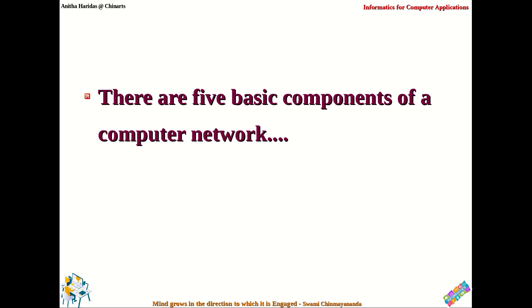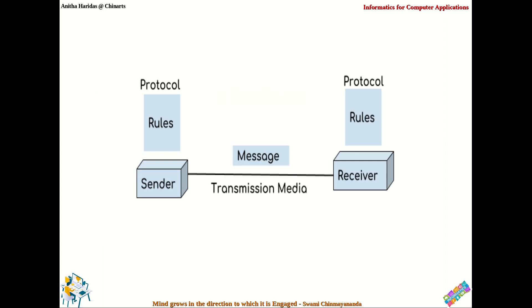Now, if you take computer network, there are five basic components: sender, receiver, message, protocol, and transmission media.